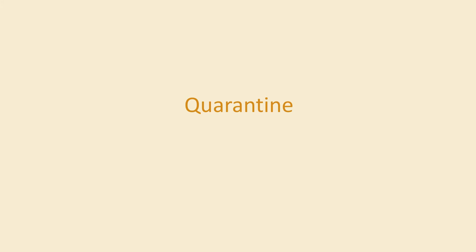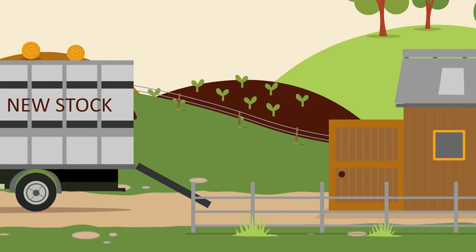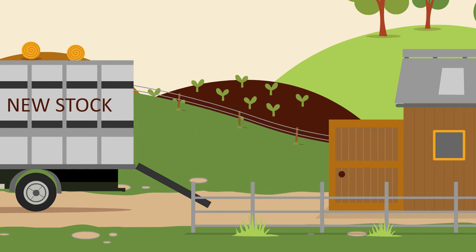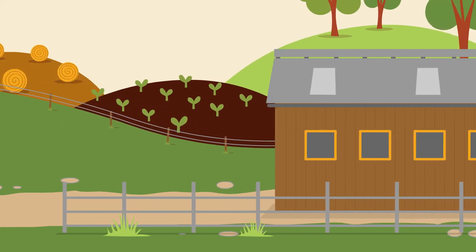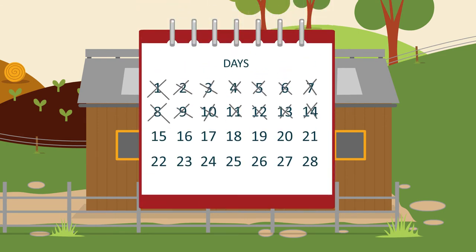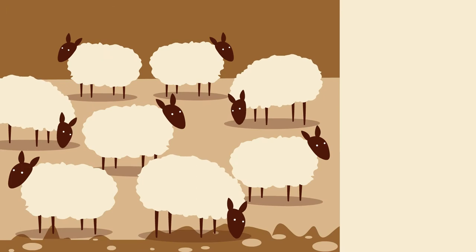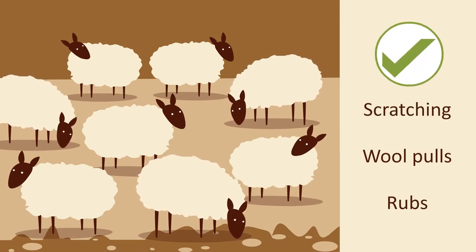Always keep introduced animals isolated and ensure best practice quarantine conditions, ideally in a building well away from other animals. Quarantine advice for sheep scab is to treat with an approved product effective against sheep scab mites and isolate them for at least two weeks. During this time, observe the quarantine sheep for any scratching, wool pools, or rubs.